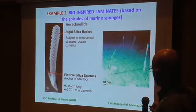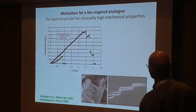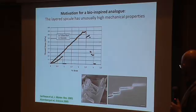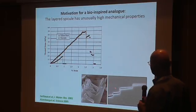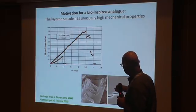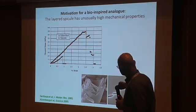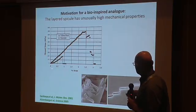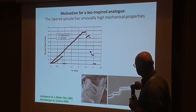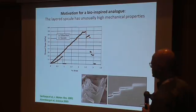A second example is the spicules of the marine sponge. The sponge sits at the bottom of the ocean anchored by silica spicules. The spicule is an array of hundreds of silica layers separated by a very thin protein material. A stress-strain curve of plain silica glass compared to this almost-same material with just one or two percent protein in between shows a huge difference in stiffness, strength, and toughness. It's an amazing crack-stopper material, and this teaches us something important.